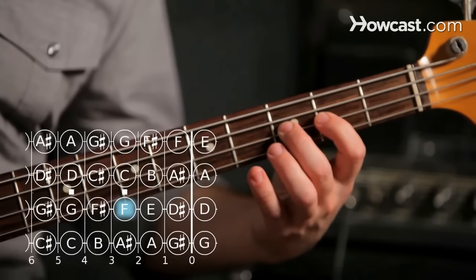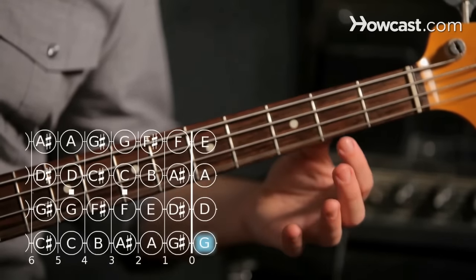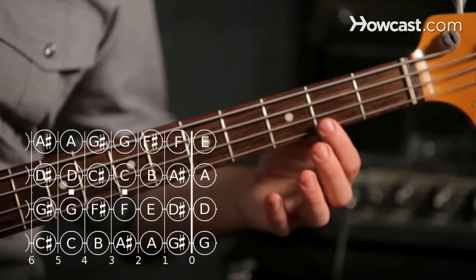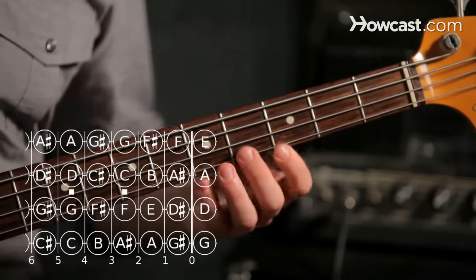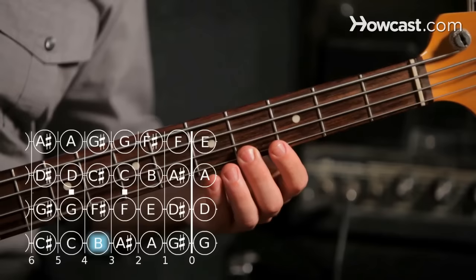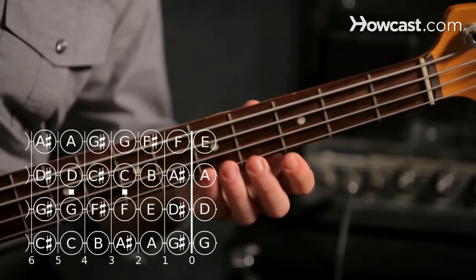Open G, A is the second fret on the G, B is fourth fret, and that brings us back to C, fifth fret on the G string.